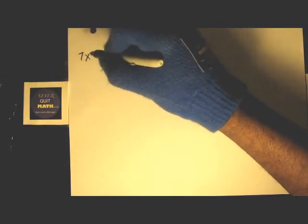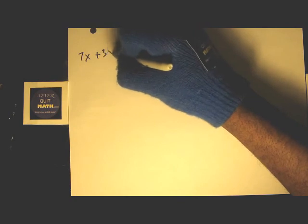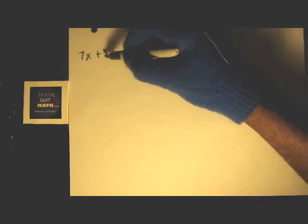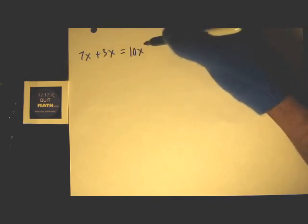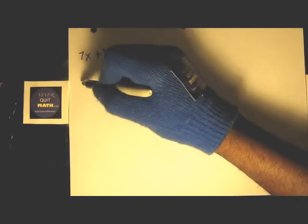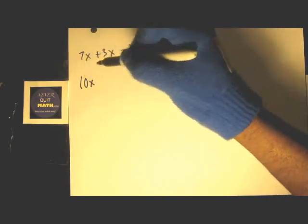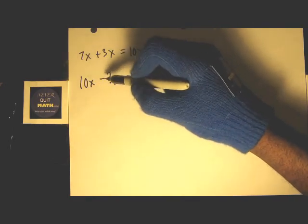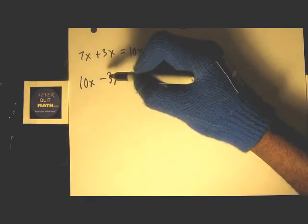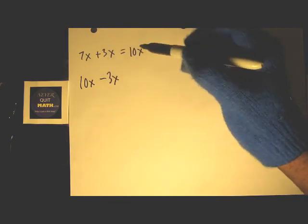If I did 7x plus 3x, I have seven apples plus three apples, so I just have ten apples, so my answer is 10x. Same way, if I had 10x minus 3x, that means I have ten apples in a basket and then I took out three apples, so ten apples minus three apples equals 7x.